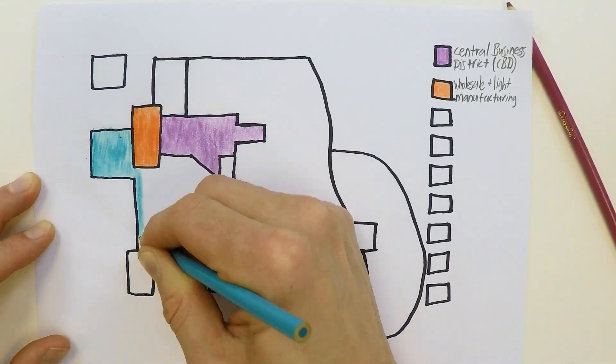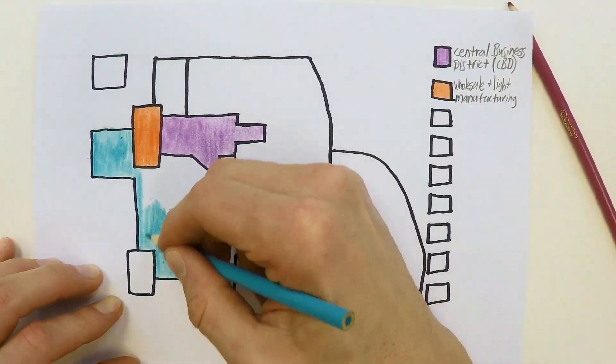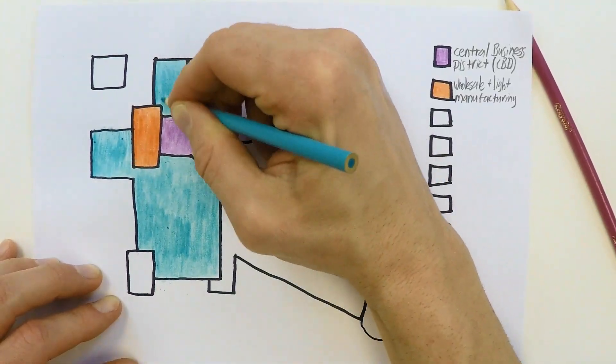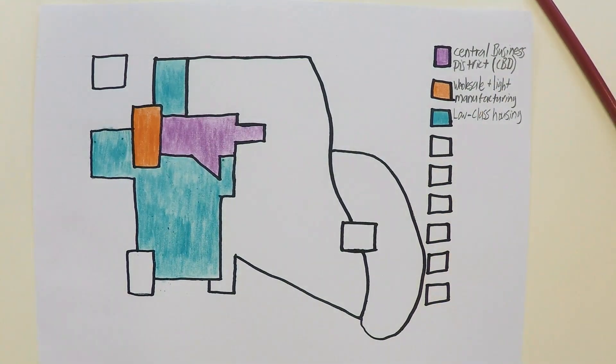Next is low class housing. Just like with the other urban models, these tend to locate near industrial jobs, as many of them are probably going to work there. Also, according to the model, things locate near certain nodes that attract them. You're usually not going to see rich people clustering in areas where there are going to be factories, noise, and pollution. This land is more affordable, however, and thus attracts lower class residents.